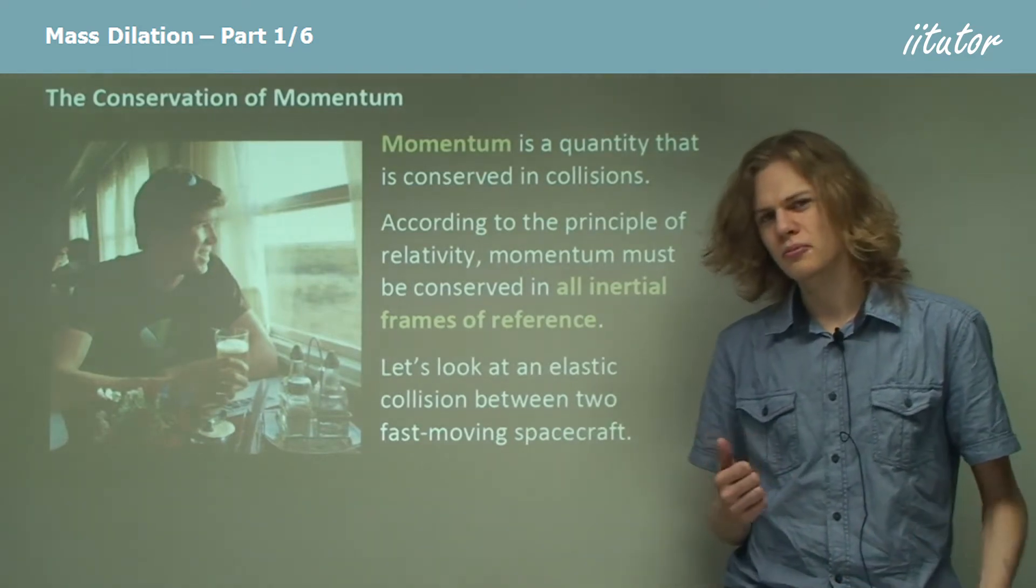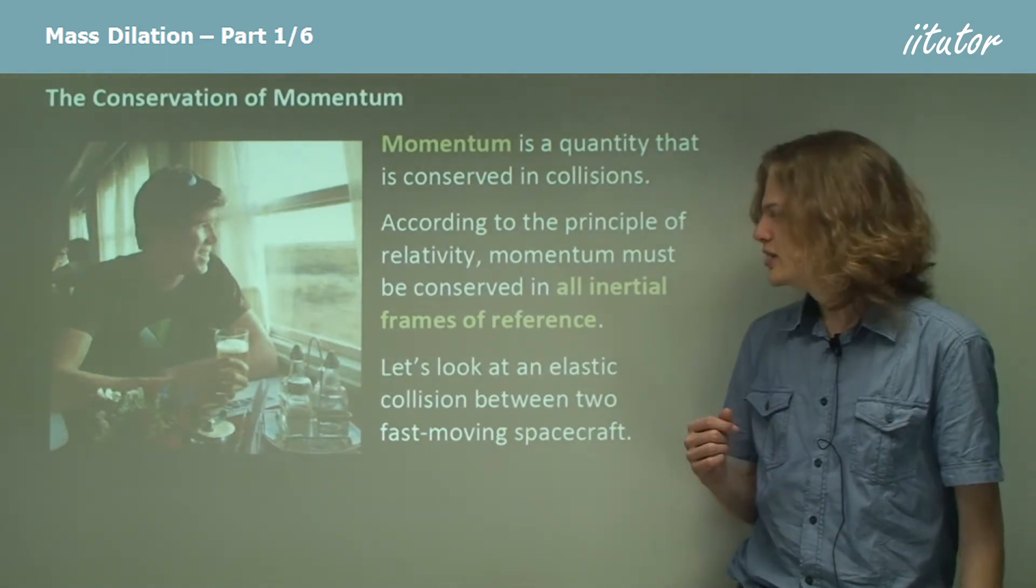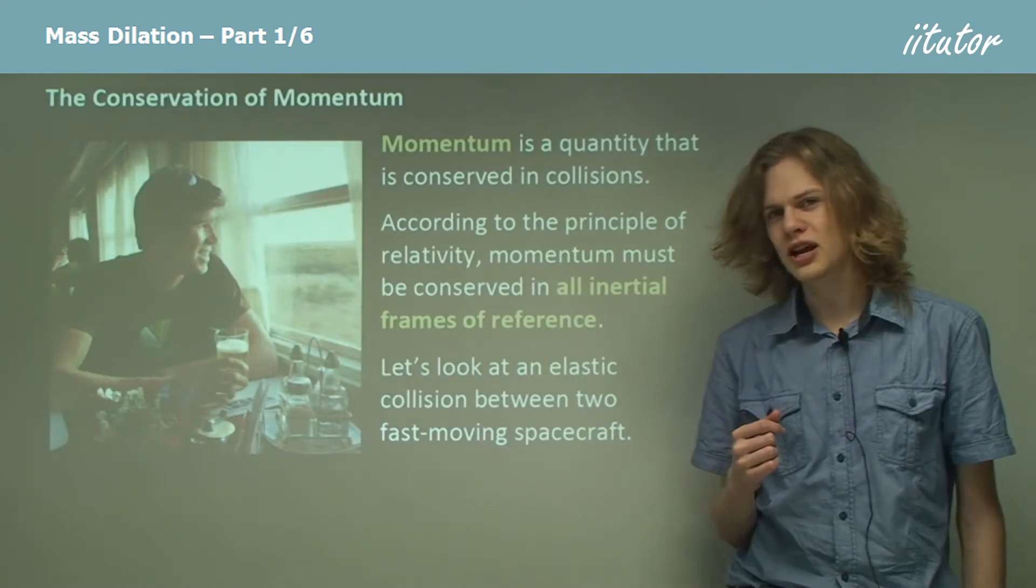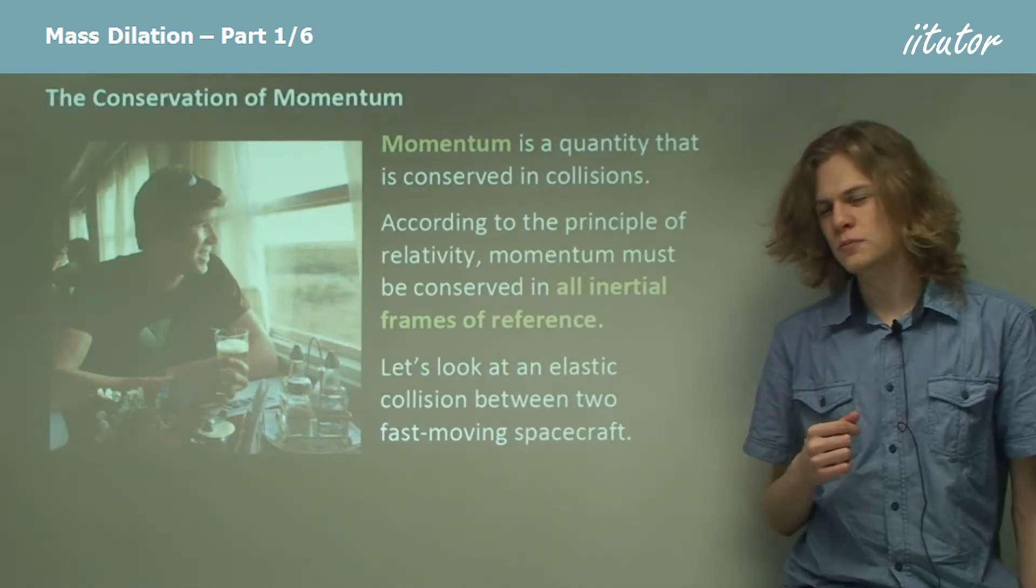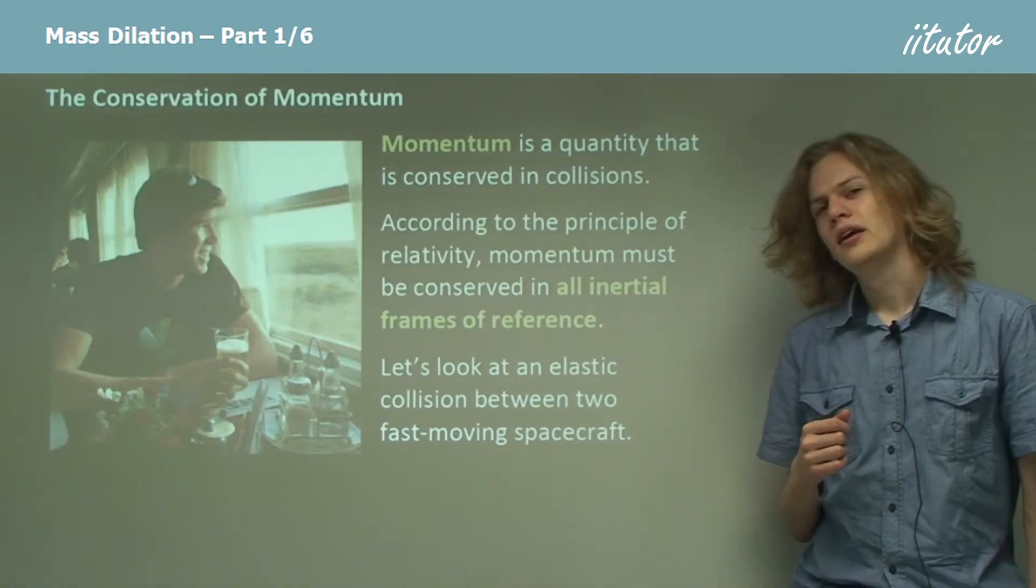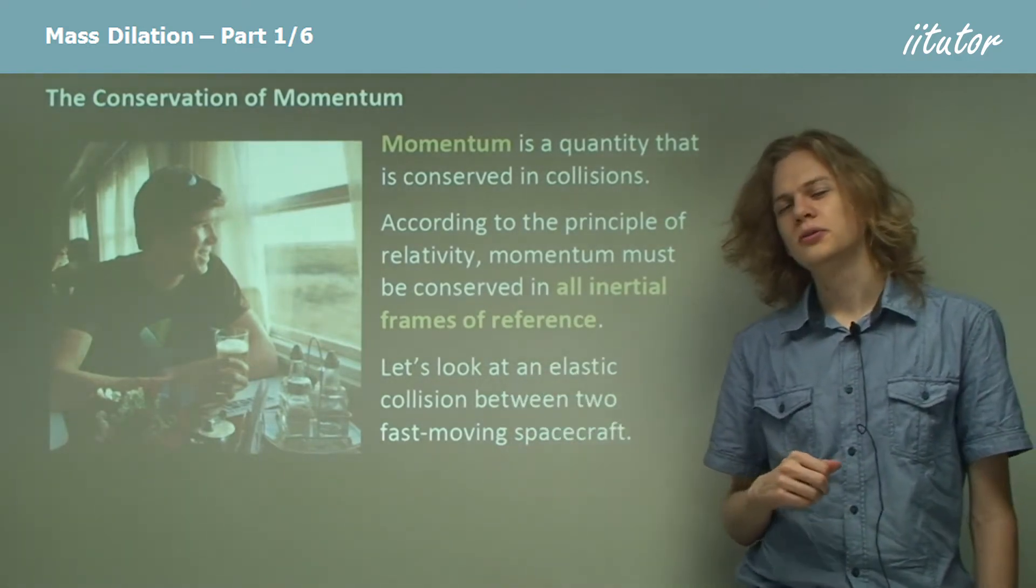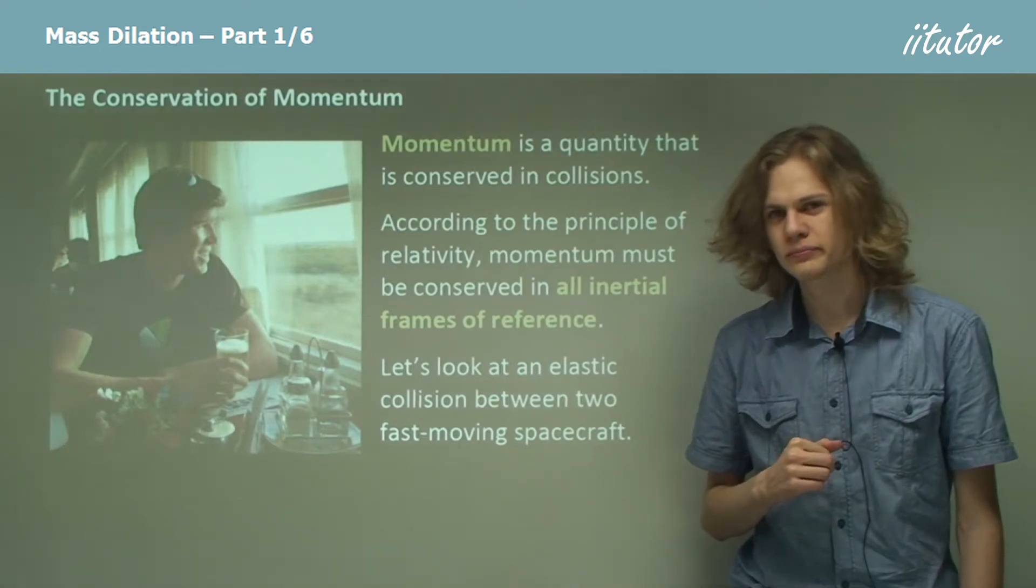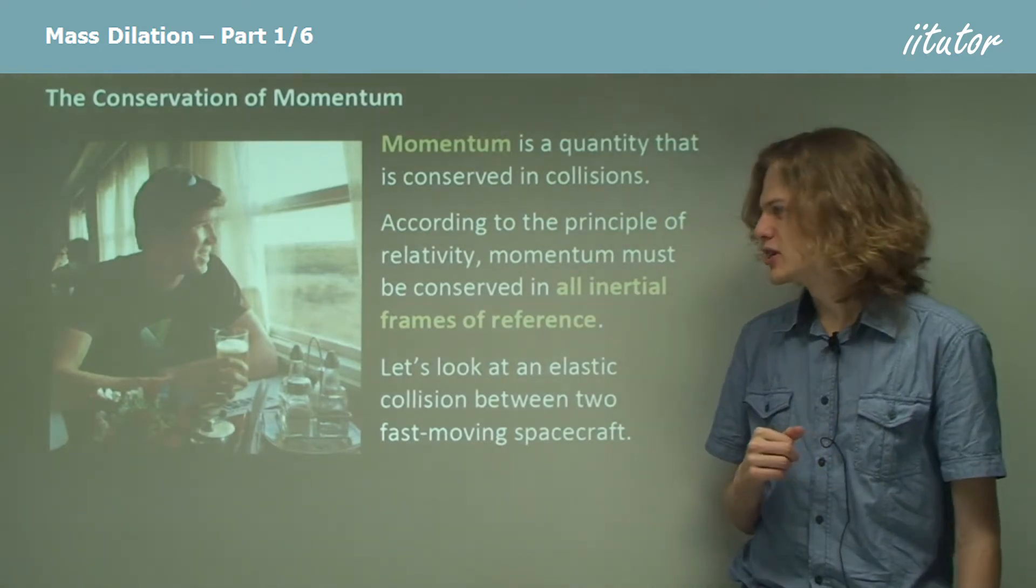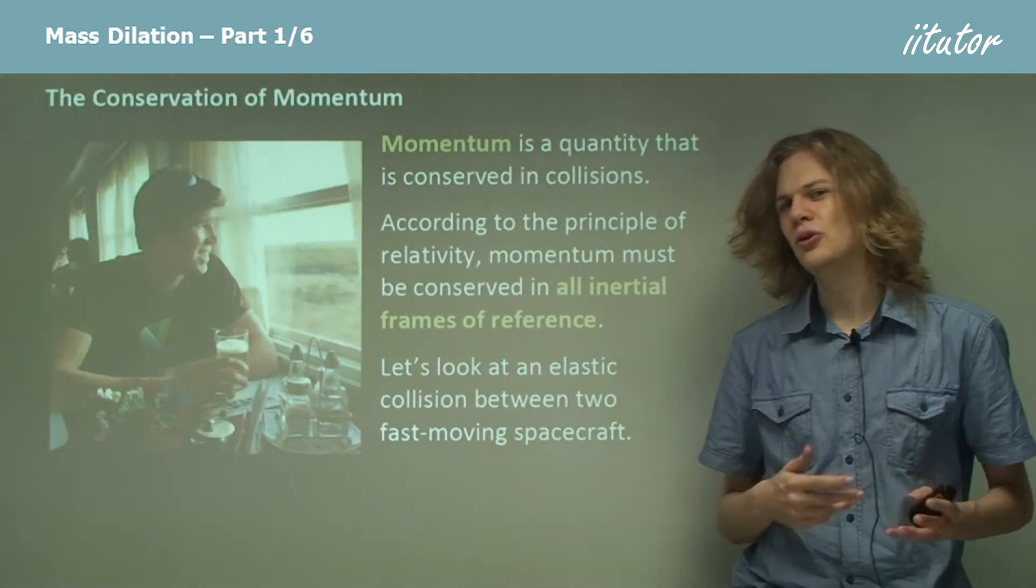So to demonstrate a little example of how that momentum can change, we're going to be doing a thought experiment. Except we're not going to be using a very fast moving train. We're going to be using a collision between two spacecraft, just because this experiment is a little hard to think of if we only use trains.